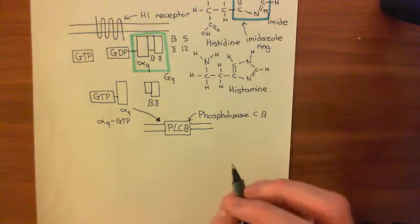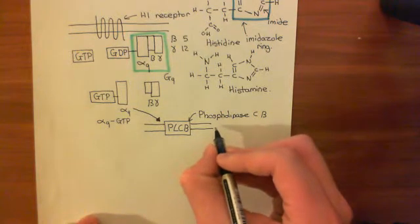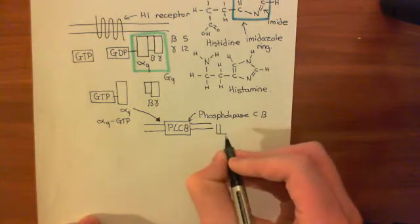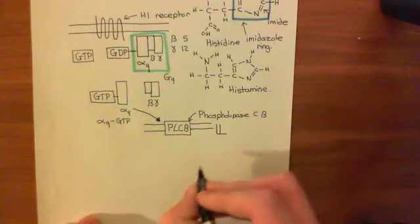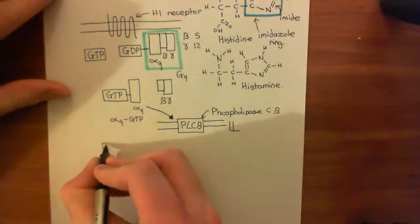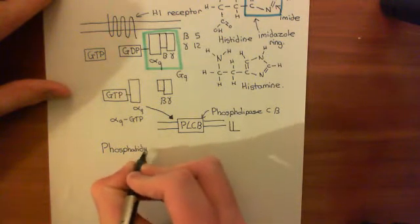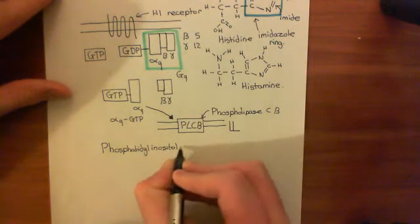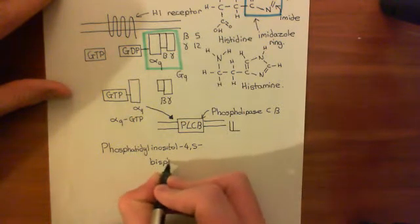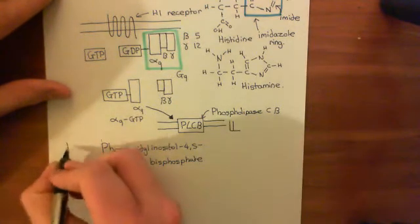The phospholipase C beta enzyme breaks down a normal component of the phospholipid bilayer. Usually in the phospholipid bilayer, you have a molecule known as PIP2, which stands for phosphatidylinositol 4,5-bisphosphate. People often abbreviate phosphatidylinositol 4,5-bisphosphate to PIP2.